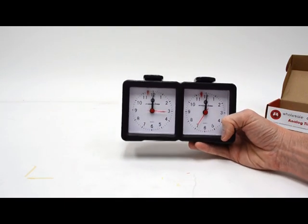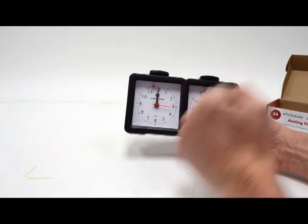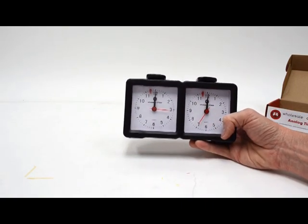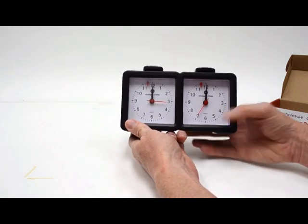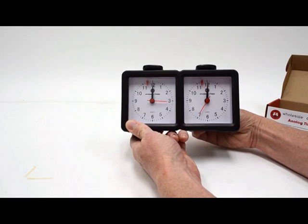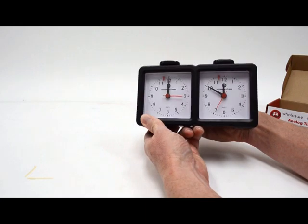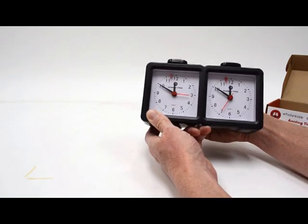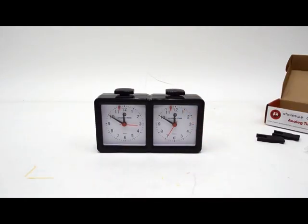Now, that's one thing about an analog clock. It's not quite as accurate as a digital clock. So you want to get it as close as you can to 12. Then you want to decide what type of game you're going to play. In this case, we're going to play a 10-minute quick game for both sides. So what I'm going to do is take the minute hand and set it back to 10 minutes to 12 on both sides of the clock.